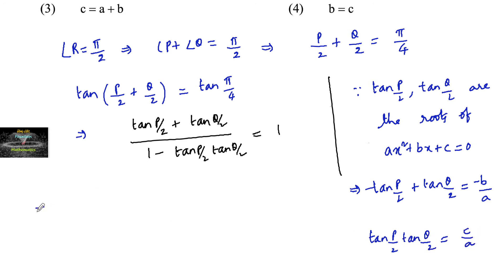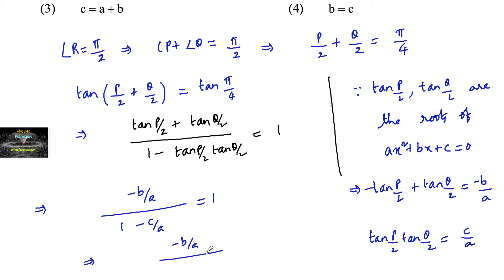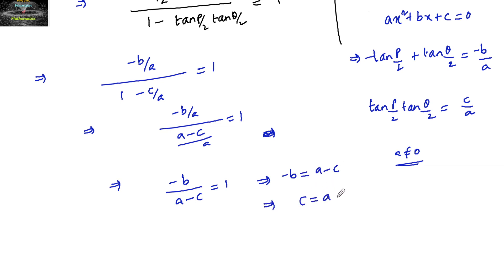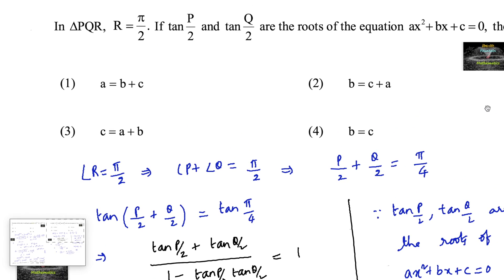Substituting: (−b/a) divided by (1 − c/a) equals 1, which simplifies to (−b/a) divided by ((a − c)/a) equals 1, giving −b/(a − c) = 1. Therefore −b = a − c, or c = a + b. So the relation between a, b, and c is c = a + b, which is the third option.